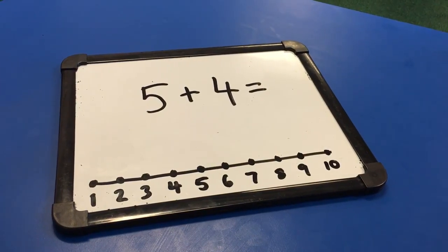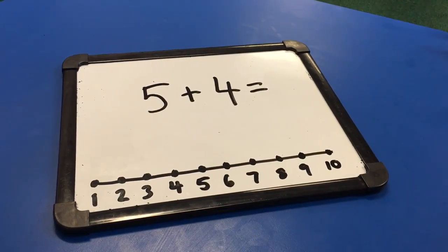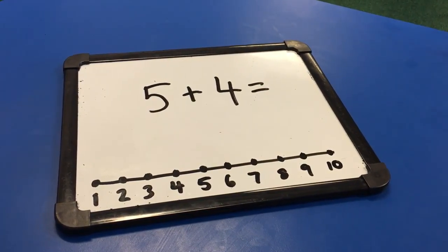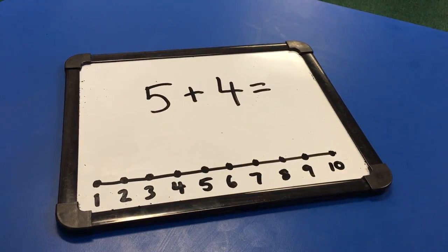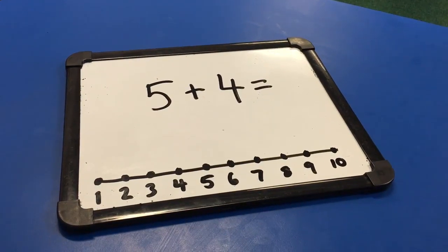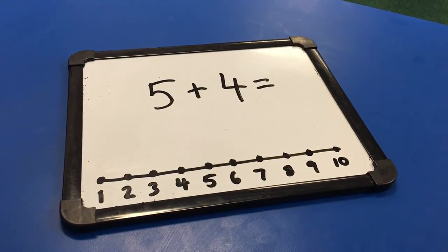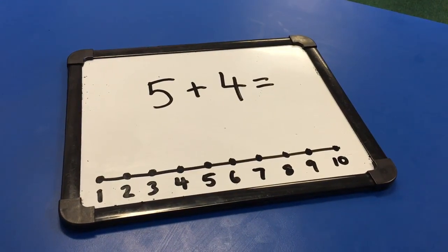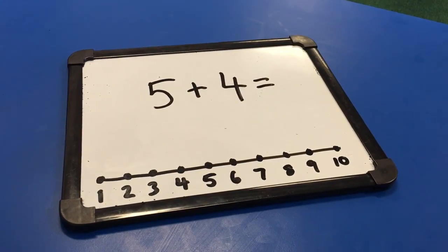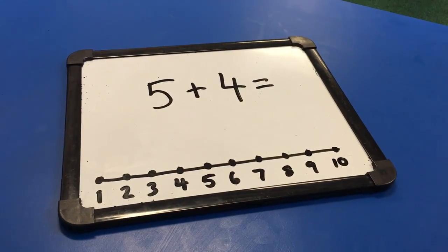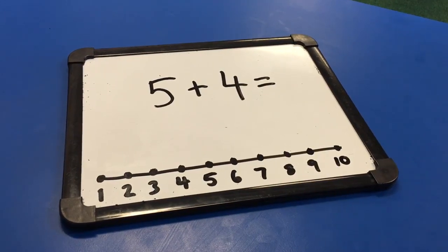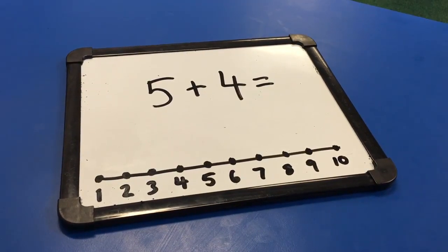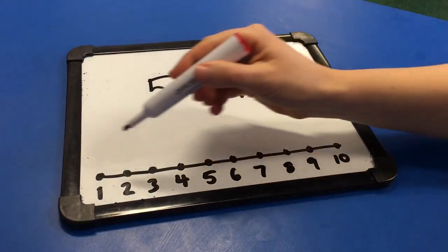Today we're trying to add numbers that are close to doubles but not quite — we call them near doubles. Today I'm adding five and four. I know that five plus four is close to five plus five.